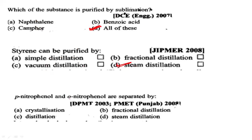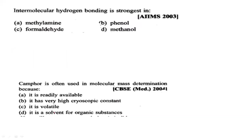Para-nitrophenol and ortho-nitrophenol are separated by — this is a very important question mentioned in many BAC textbooks. They are separated by steam distillation. This is an important point to remember.